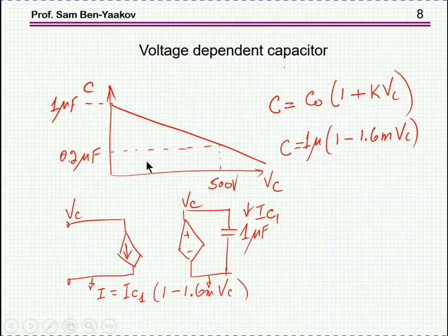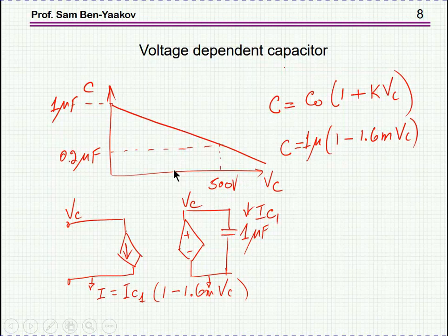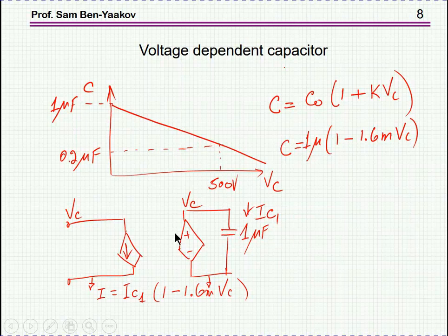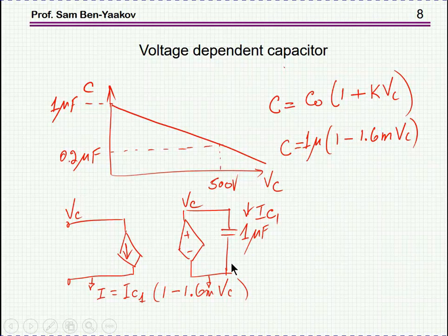We can use the same idea if we have a voltage-dependent capacitor. The constant K will now be dependent on the voltage on the capacitor. Suppose we have a capacitor which has this behavior — similar to what we saw before but with a different voltage scale. It starts with 1 nanofarad then goes down. We can express this behavior as K equals 1 minus 1.6×10⁻³ times Vc, where Vc is the voltage across the capacitor. Using exactly the same idea, I start with a 1 microfarad capacitor, translating the voltage across it to the input.